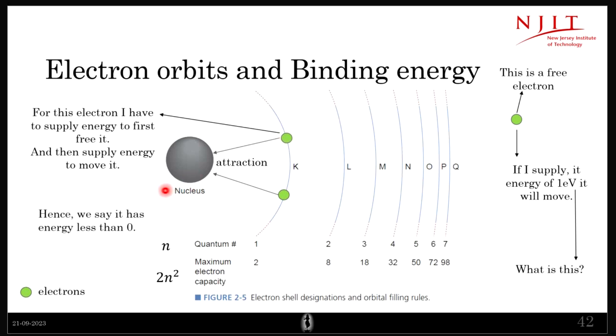So hence there's this concept that the energy, or the energy that this particular electron has, or these both of these electrons have, is negative or less than zero. Because I have to supply some energy to make its energy zero, because it's not a free electron. So this is a free electron—this has energy of zero. But for this I will first have to apply some energy, then it becomes free—that is, then it has zero energy. And only then I can supply some more energy so that it can move. So hence—